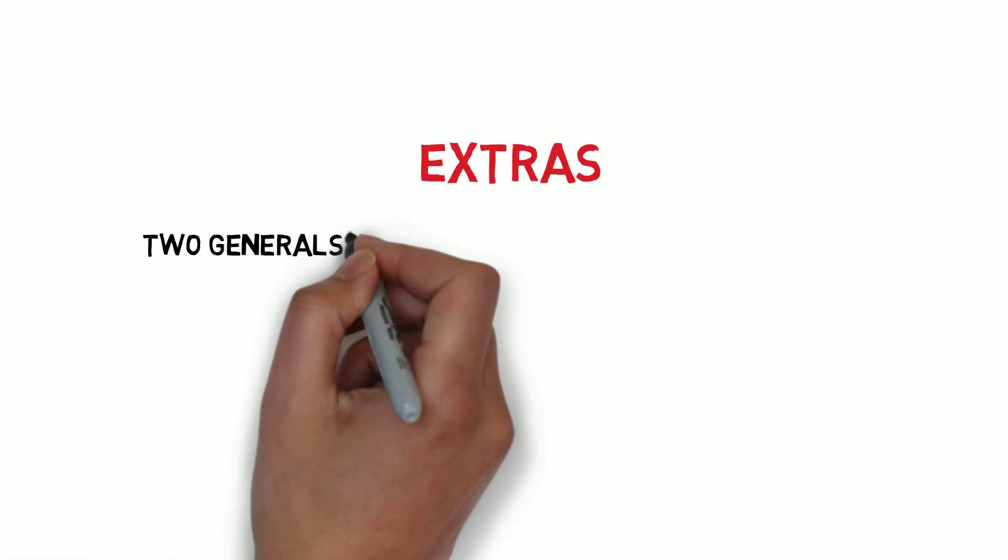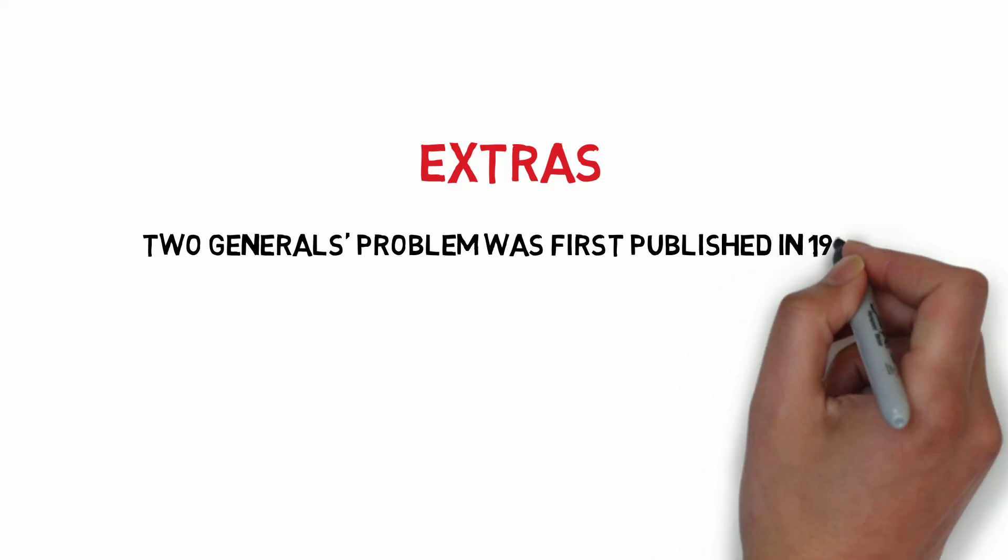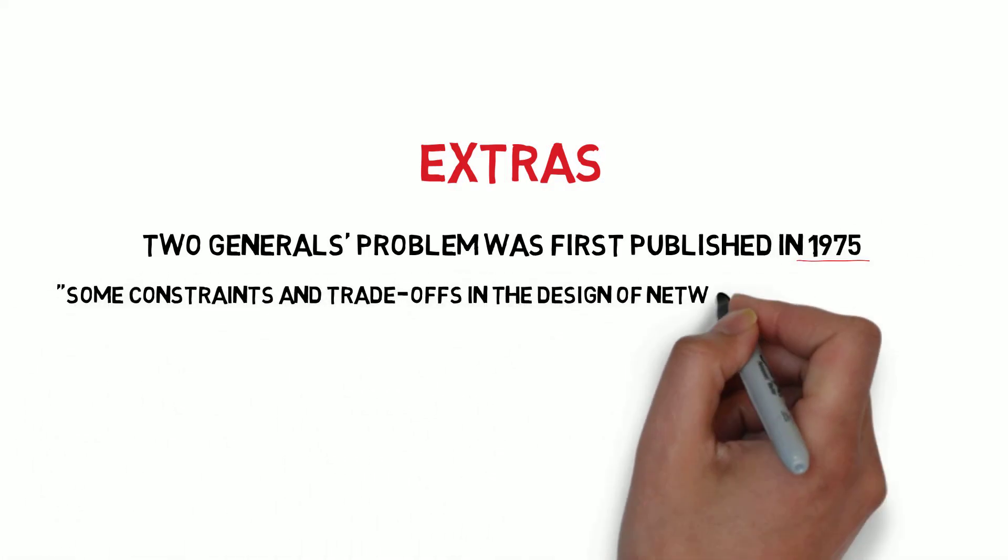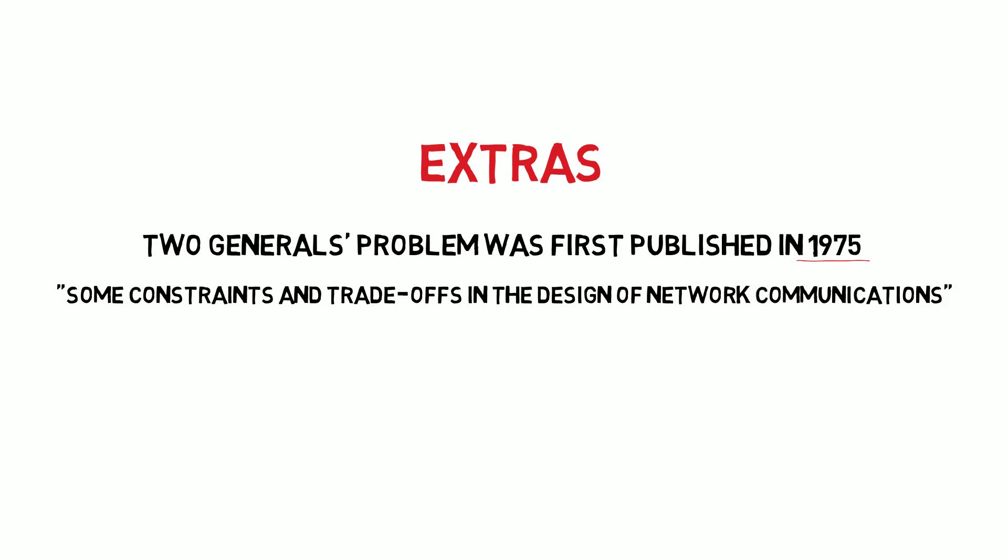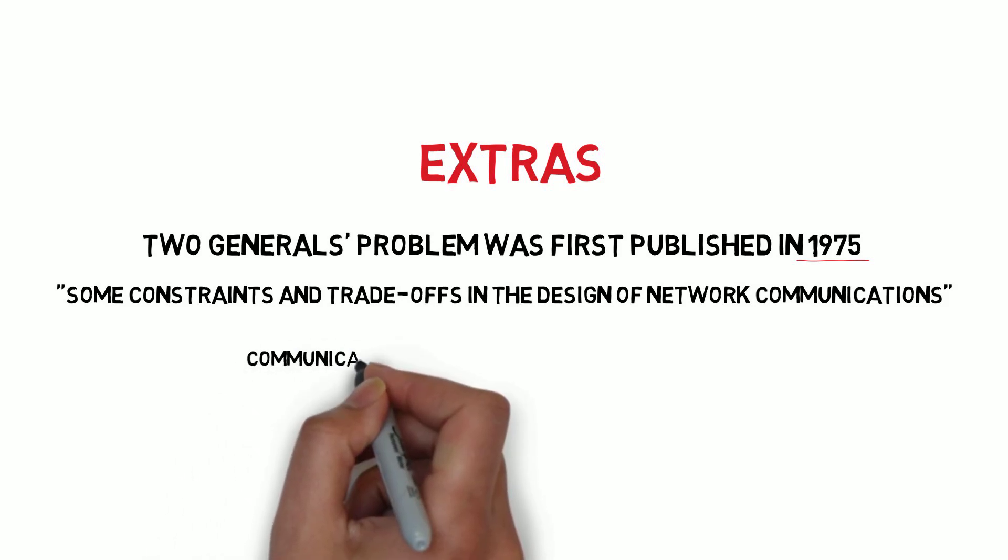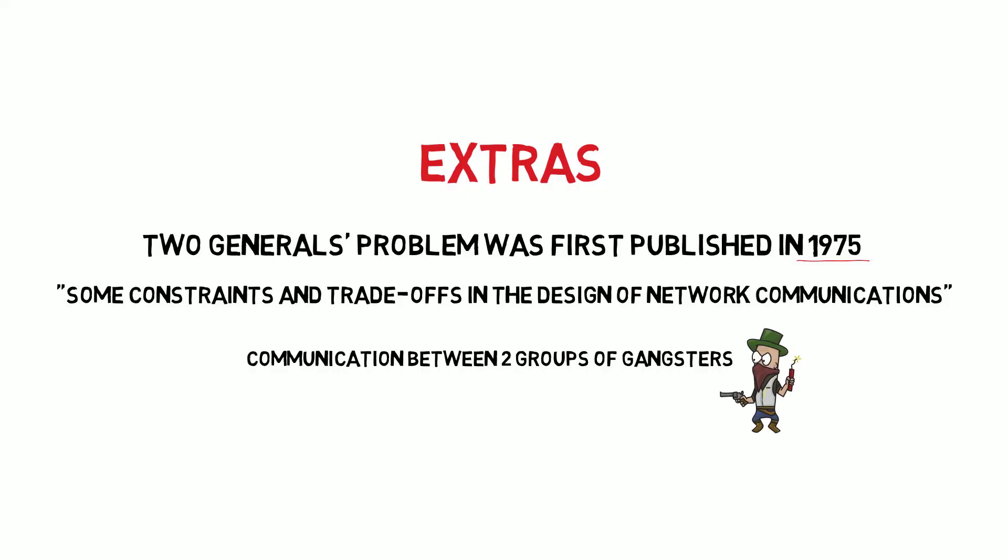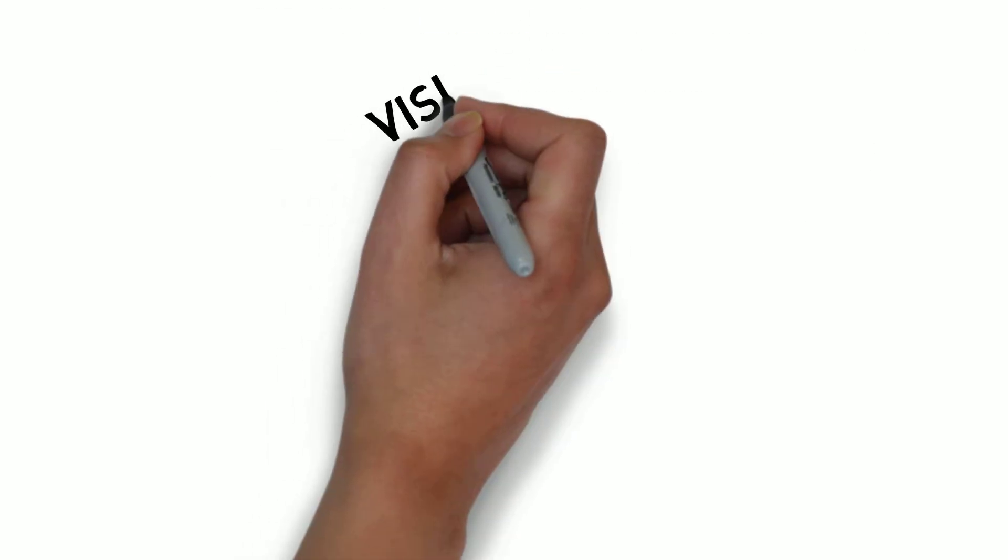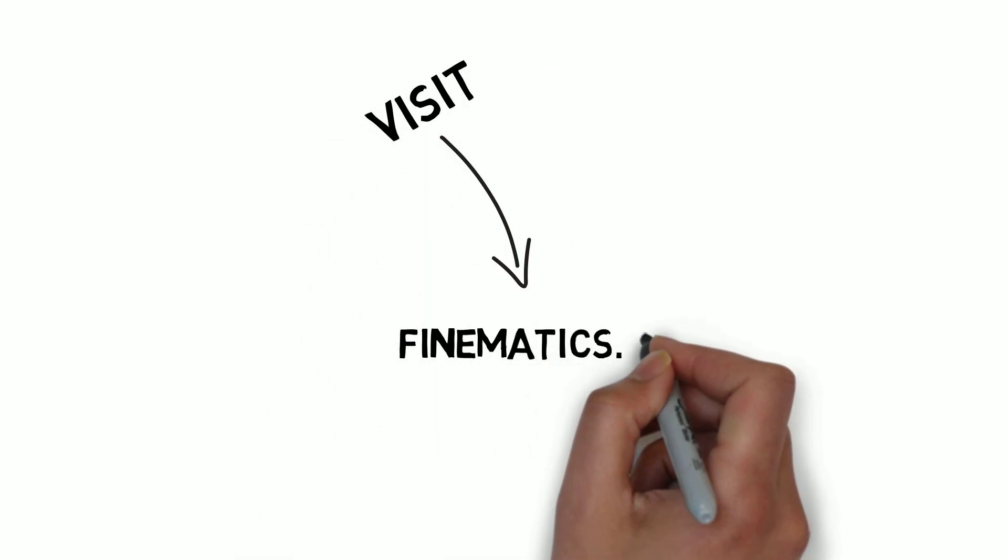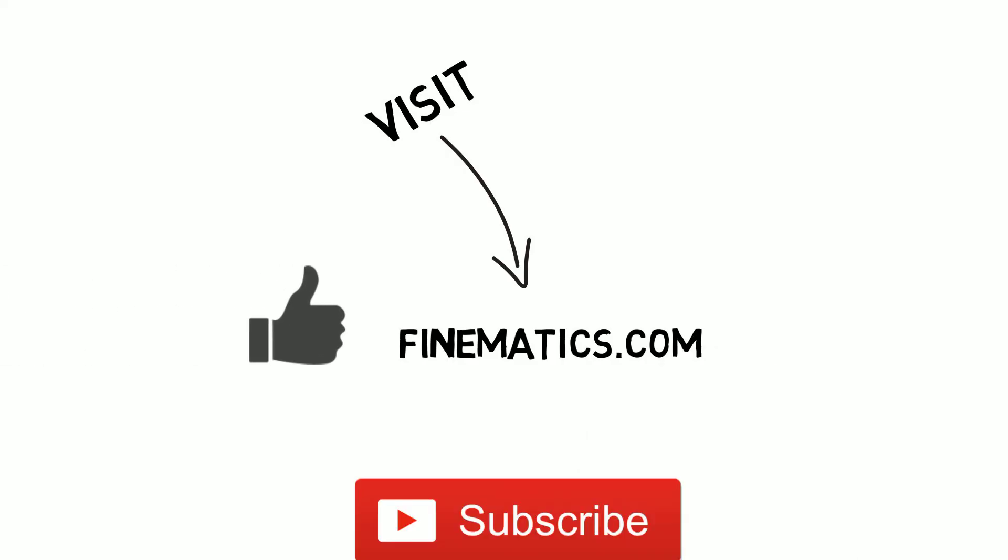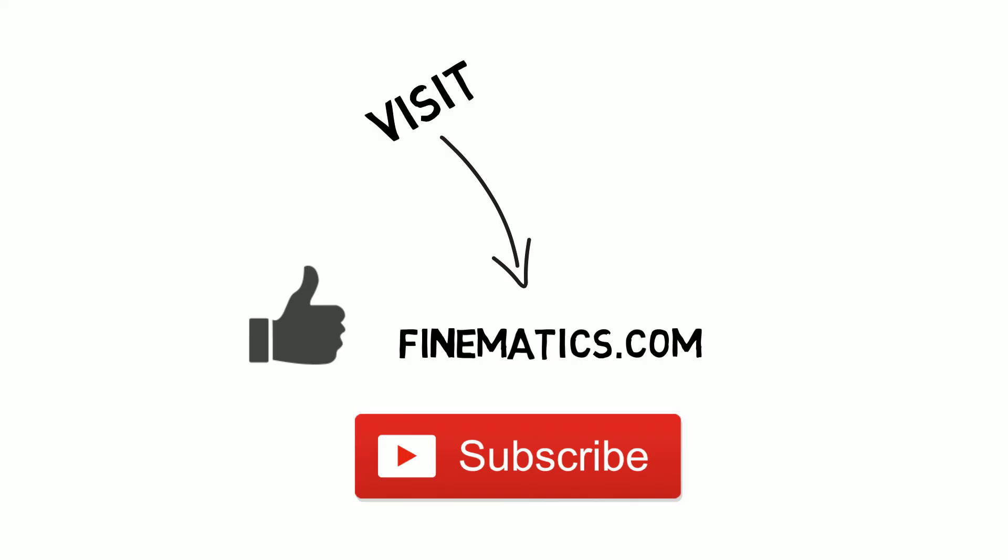Two generals problem was first published in 1975, in some constraints and trade-offs in the design of network communications paper, and described a problem with communication between two groups of gangsters. Yes, gangsters. If you want to read the original version, check the link in the description box below. And also visit my website finematics.com. If you liked the video, please hit the like button and subscribe to my channel. Thanks for watching.